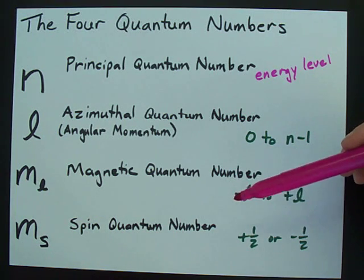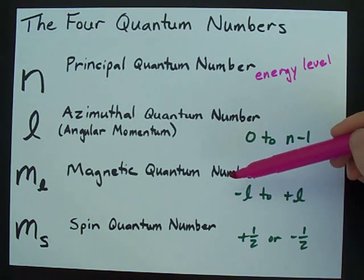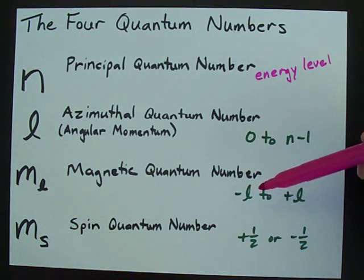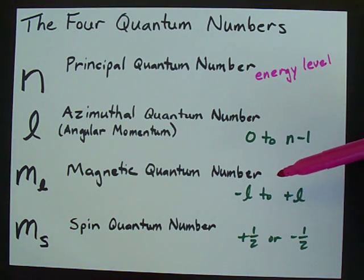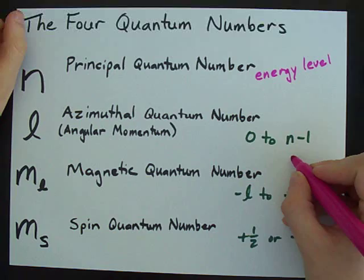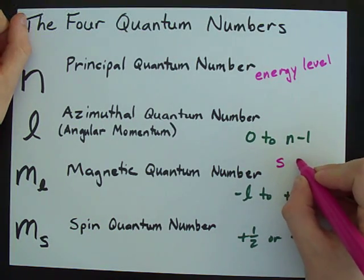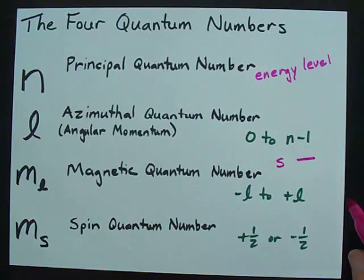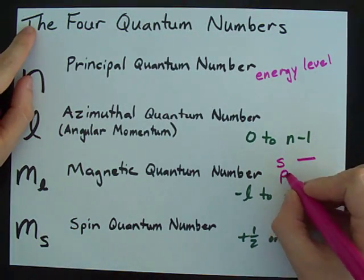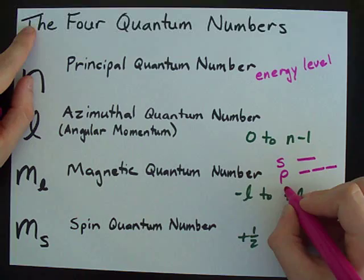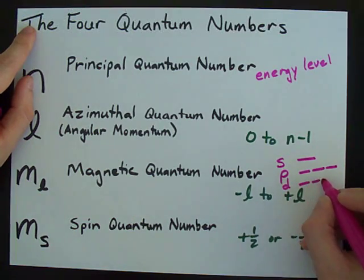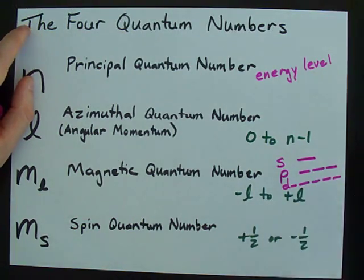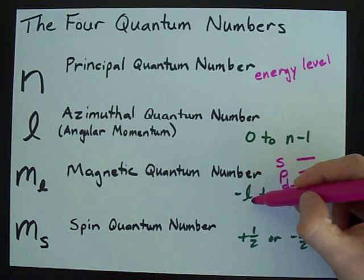Then we have something called the magnetic quantum number, which ranges from negative l to positive l. Now the reason we give it that rule is to explain the fact that each s orbital only gets one dash in the electron filling diagrams like this one. Each p orbital gets three, each d gets five, and so on. It's the only reason we have that.